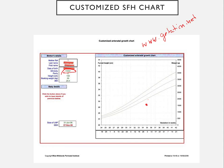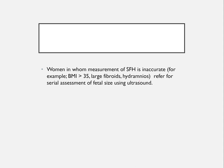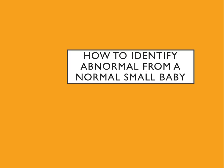If symphysiofundal height plotted on a customized chart falls below the lower line, it indicates a small baby; between the two lines is normal; above the upper line is abnormally large and the patient should have an ultrasound scan for growth assessment. Certain factors impact fundal height measurement — large babies, obese mothers, women with fibroids, or polyhydramnios are not good candidates for fundal height measurements.